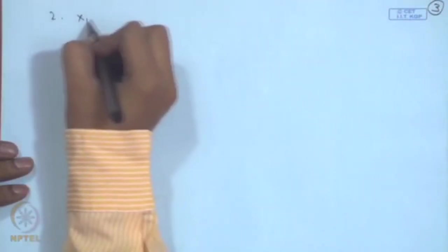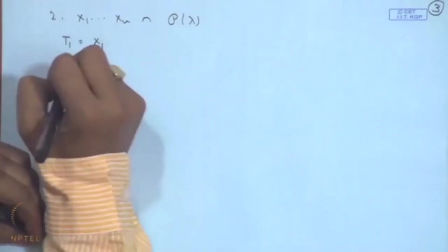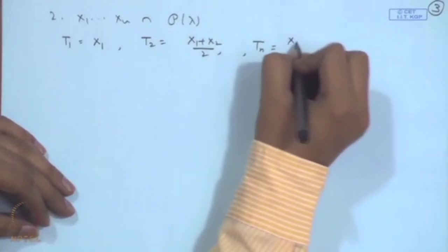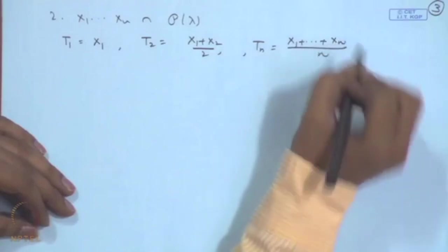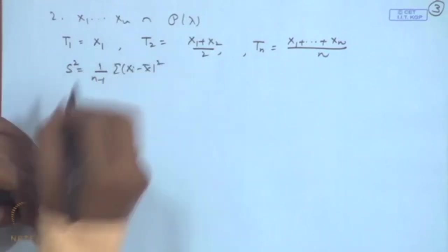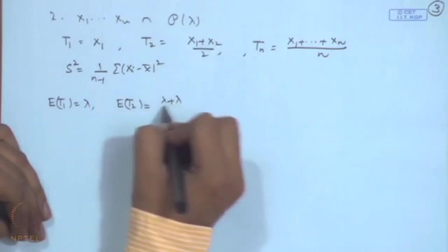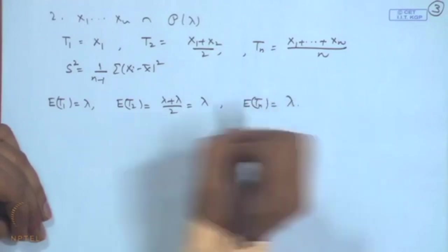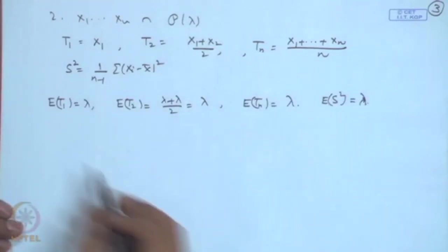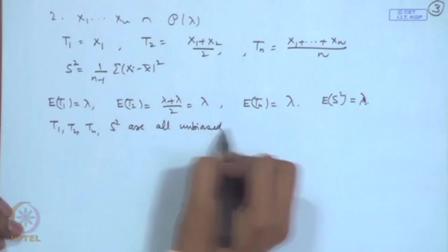Let us take another case: x₁, x₂, ..., xₙ following Poisson distribution. Define t₁ = x₁, t₂ = (x₁ + x₂)/2, tₙ = (x₁ + x₂ + ... + xₙ)/n, and s² = (1/(n-1))Σ(xᵢ - x̄)². Then E[t₁] = λ, E[t₂] = (λ + λ)/2 = λ, E[tₙ] = λ, and E[s²] = λ as well. So t₁, t₂, tₙ, and s² are all unbiased for λ. Since we have several unbiased estimators, we need some other criterion to determine which is preferable.